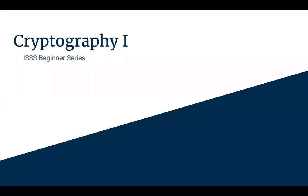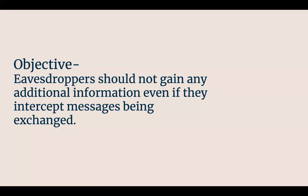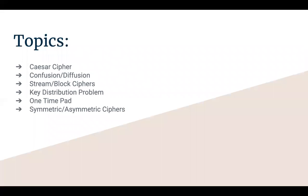Today we're talking about cryptography — this is part one out of two parts, and the second part is next semester. Cryptography is basically a subfield of security, and its objective is that if an eavesdropper intercepts a message, they shouldn't be able to gain any additional information even if they see the message. Today we're just going to be covering the basics and some definitions.